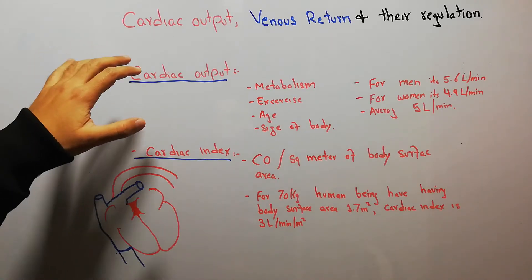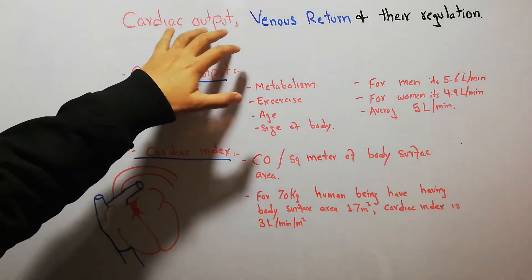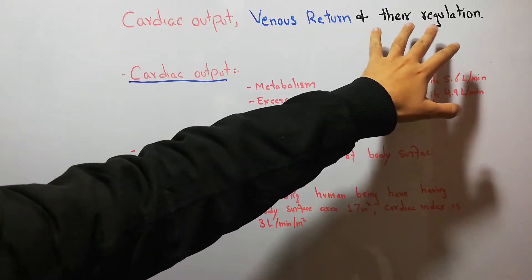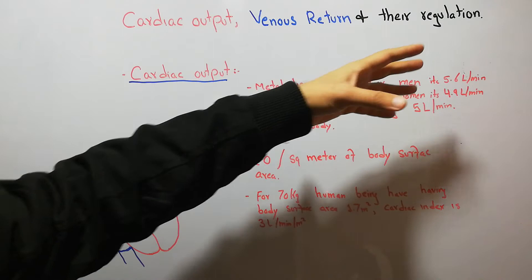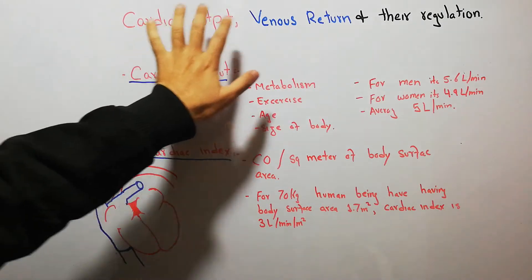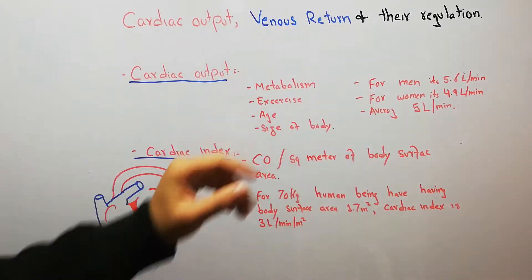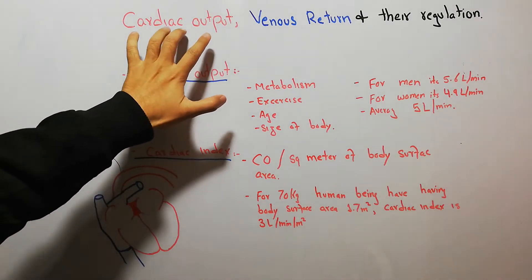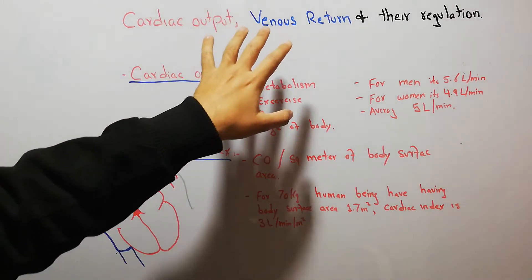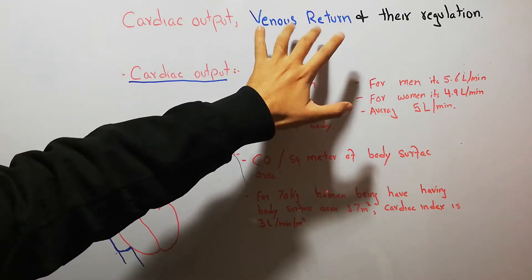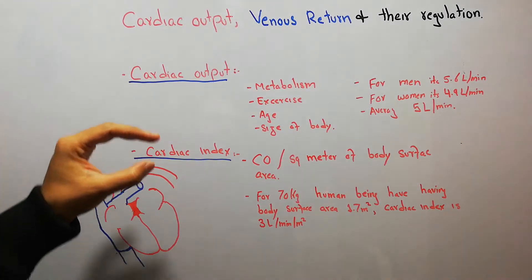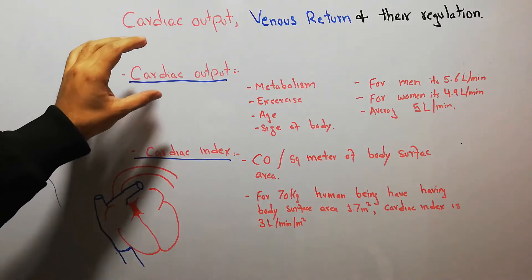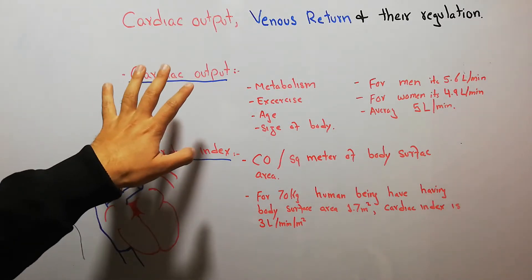Today we are going to start our new chapter about cardiac output, venous return, and the different regulatory mechanisms for cardiac output and venous return. Initially we will focus on cardiac output, then on venous return. Today's lecture covers the definition and different parameters used to assess cardiac output.